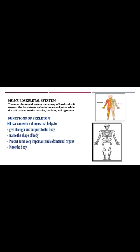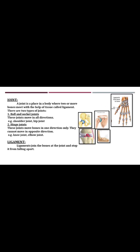The skeletal system consists of a framework of bones which is called the skeleton. The functions of the skeleton are: it gives strength and support to the body, frames the shape of the body, protects some very important and soft internal organs, and helps to move our body parts. A joint is a place in the body where two or more bones meet with the help of a tissue called ligament.